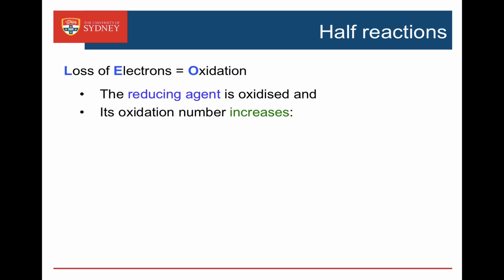Oxidation involves the loss of electrons. In an oxidation, a reducing agent is oxidized and its oxidation number increases. Here we have zinc metal going to zinc 2+ and losing two electrons, so the zinc is going from an oxidation number of zero to an oxidation number of plus two — it's increased.